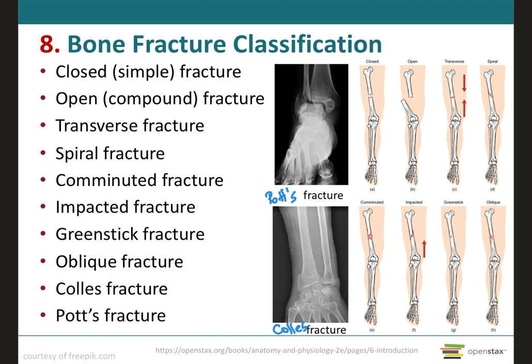Some of the common types of fractures are shown and described here. The first is the open fracture, where the broken ends of the bones protrude through the skin. Conversely, the closed fracture does not break the skin, as seen on this image. The transverse fracture occurs straight across the long axis of the bone. Next, the spiral fracture, where bone fragments are pulled apart as a result of a twisting motion.